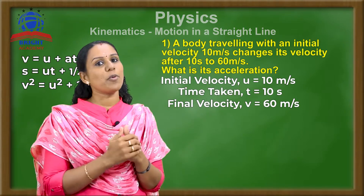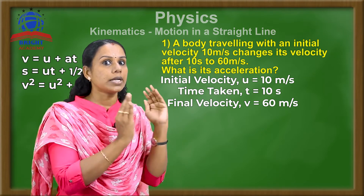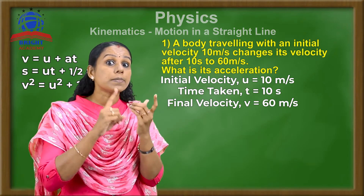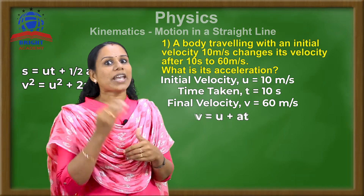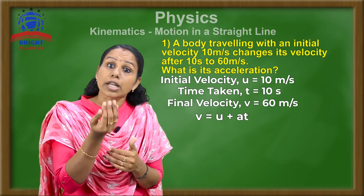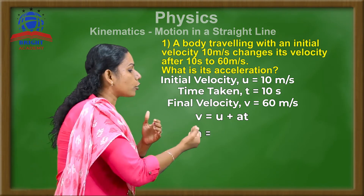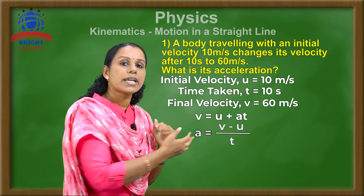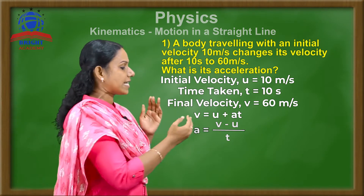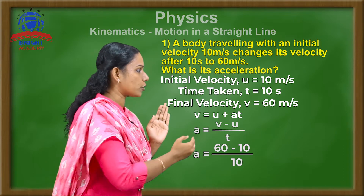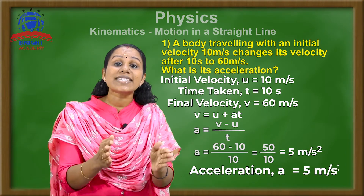We need to find the acceleration. We use the first equation of motion: v = u + at, which rearranges to a = (v − u) / t. Substituting the values: a = (60 − 10) / 10 = 50 / 10, which equals 5 meter per second square.